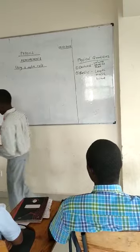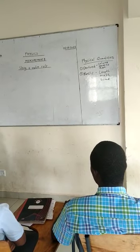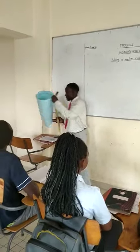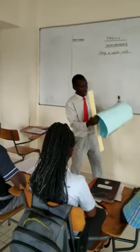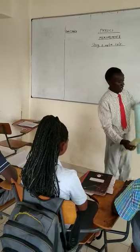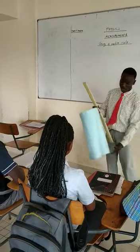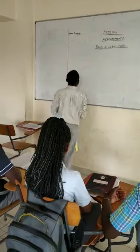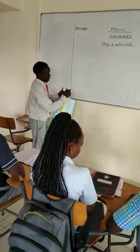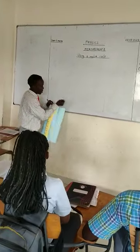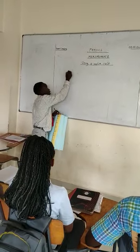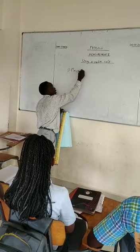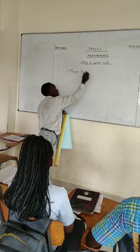Now, today I want us to talk about how we can measure using a meter ruler, okay? I see that the surface here is open, and you are going to help me measure this one. So, before I start, I would like to tell you: whenever you measure using a meter ruler, first of all, make sure you place your ruler against the object.